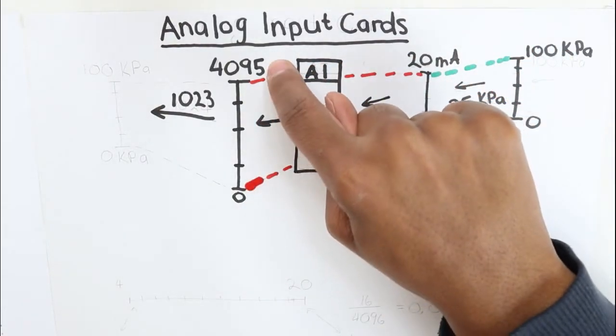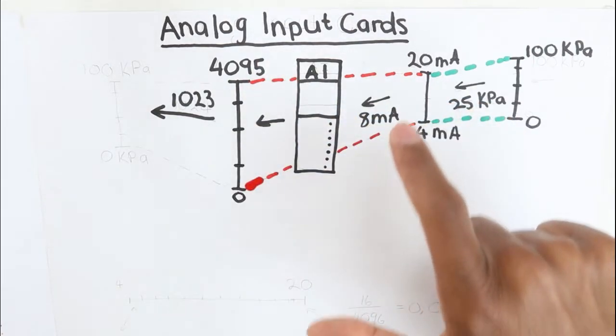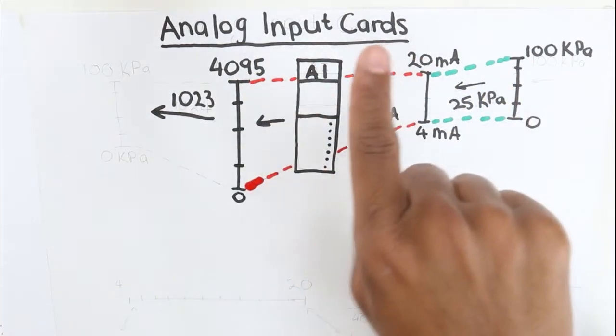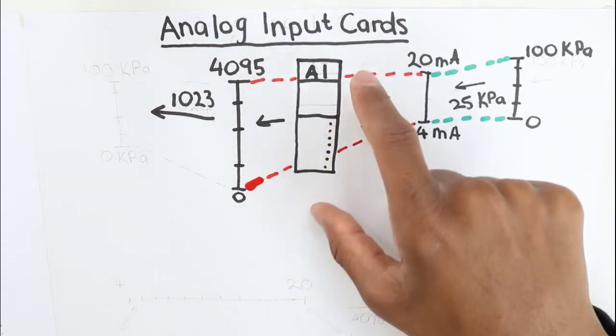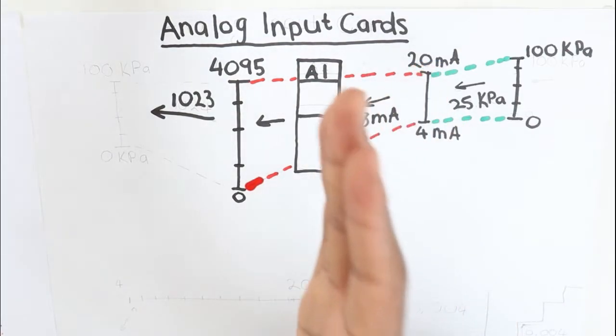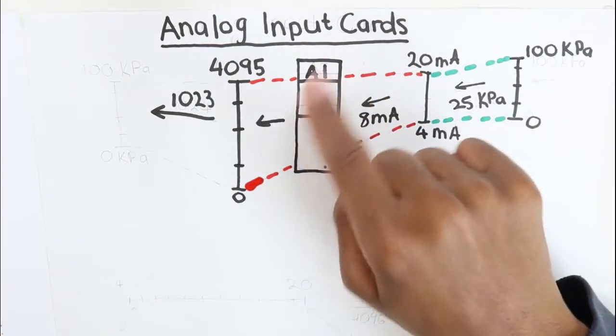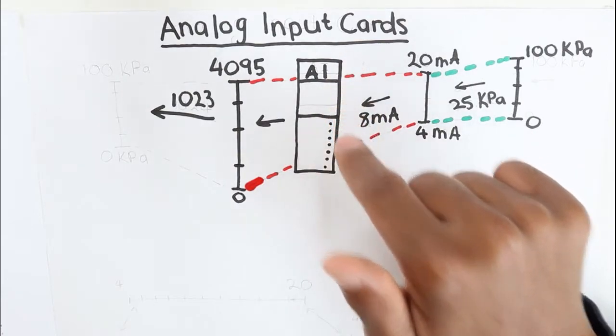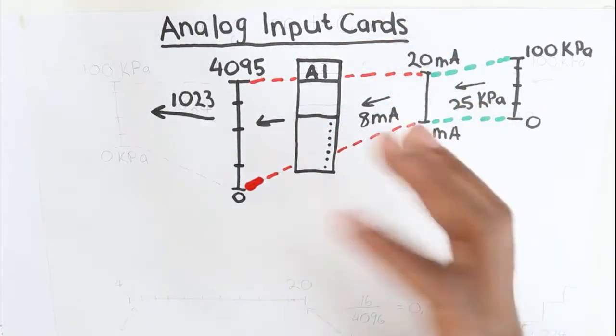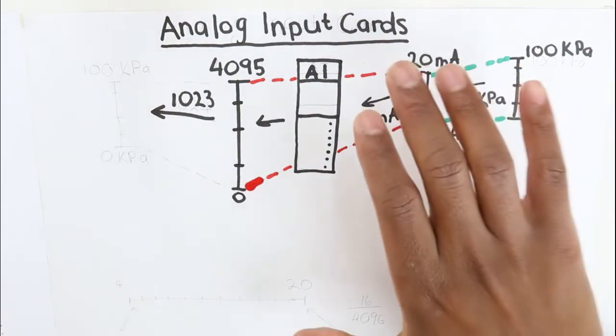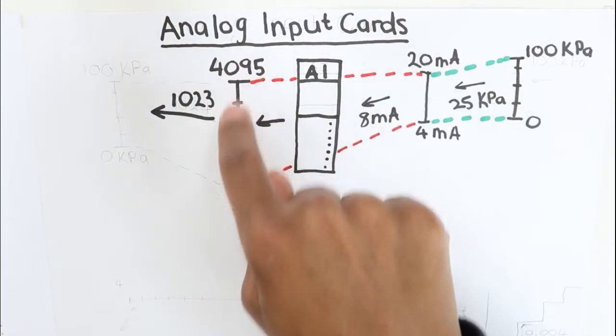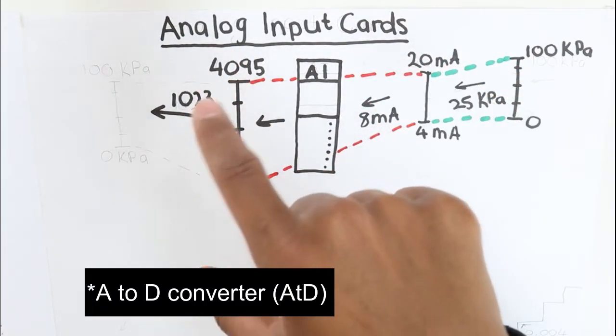So the 0 to 4095 range is just a common range for most analog input cards and it can be different for different manufacturers, even for the different models of the card that you might be using. It is always best to check the manual of the card to determine the range of your ADC converter.